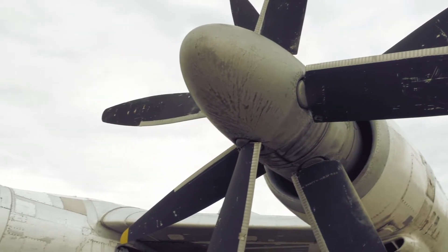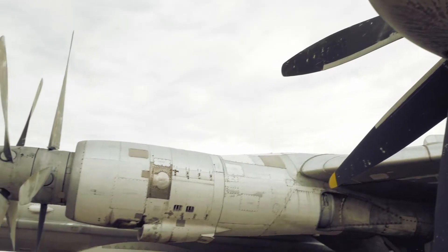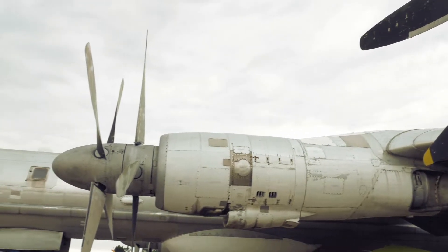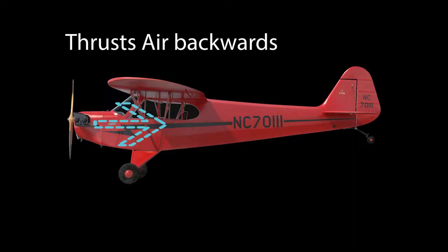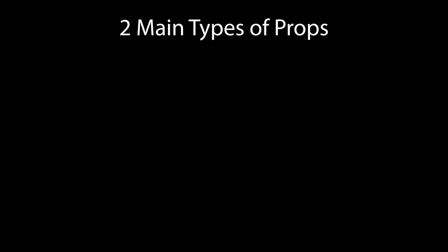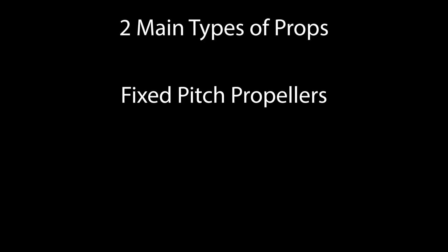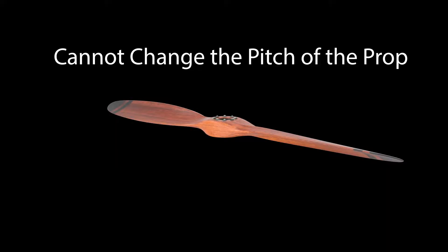Before we can solve the mystery of the blue knob, we have to solve the mystery of what is a propeller. A propeller creates thrust by using the energy of the engine and crankshaft, thrusting air backwards and propelling the aircraft forward. Now believe it or not, there are two main types of propellers: fixed pitch propellers and variable pitch propellers. Fixed pitch propellers are basically normal propellers — they cannot change pitch, they are static, and they could be made of wood, metal, etc.